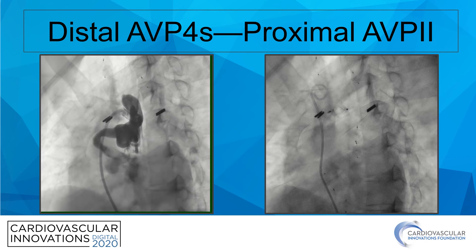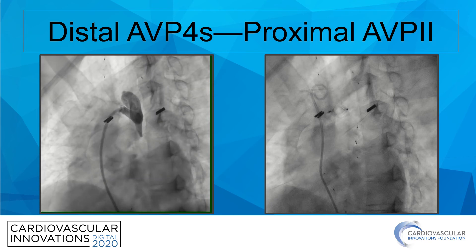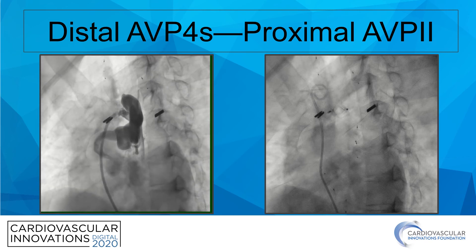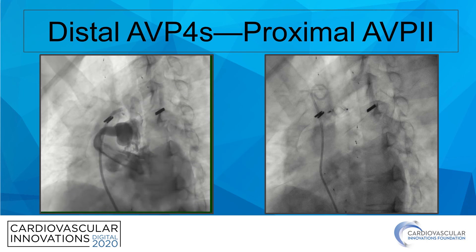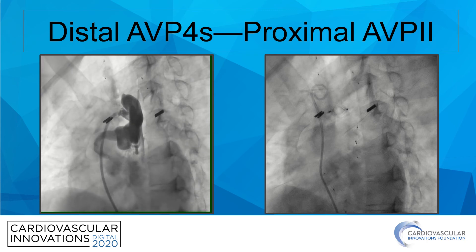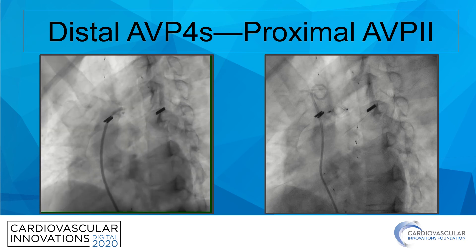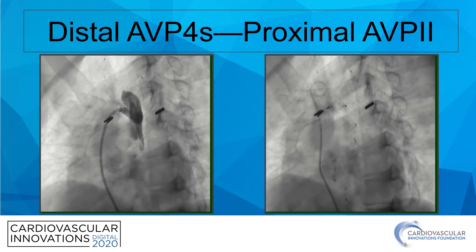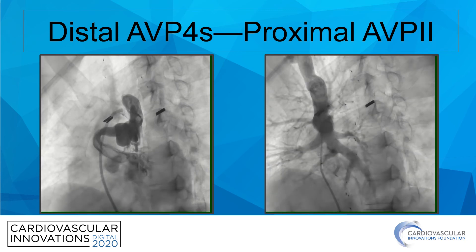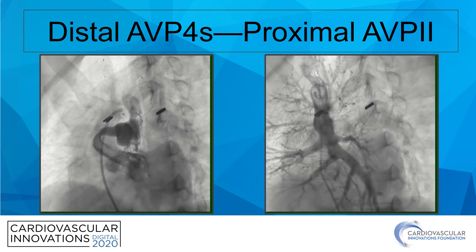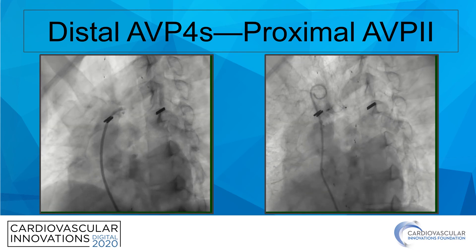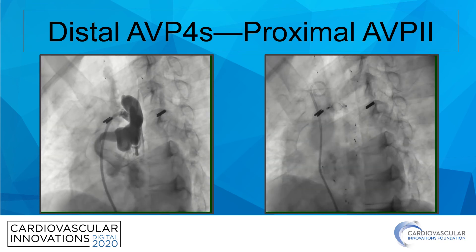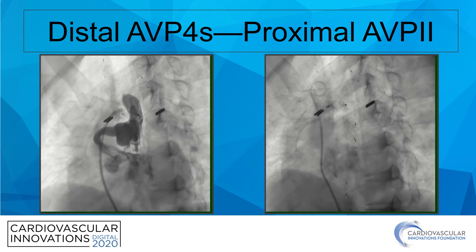Returning to the Fontan cases presented earlier: this particular venovenous collateral had feeder vessels distally that I wanted covered, for which I used AVP-4 devices with good results. The proximal trunk had adequate length and diameter for an AVP-2, which ended up sitting very nicely at the ostium and led to complete occlusion of the collateral.